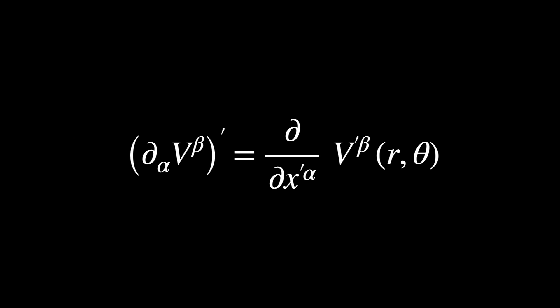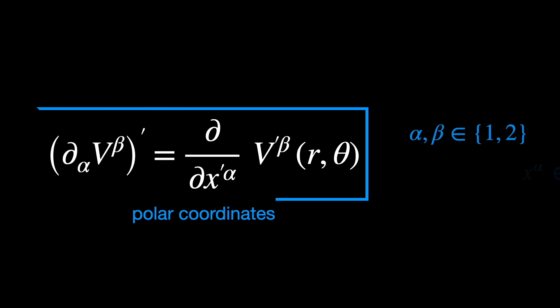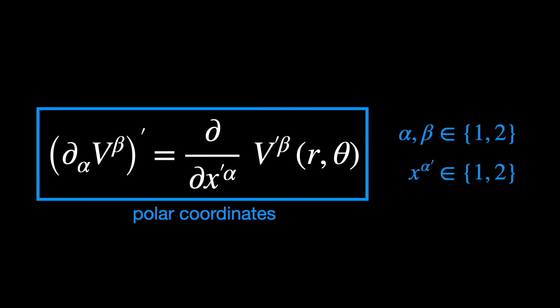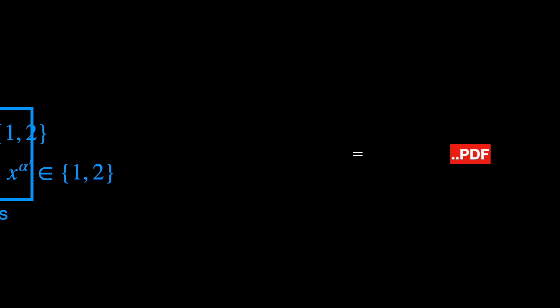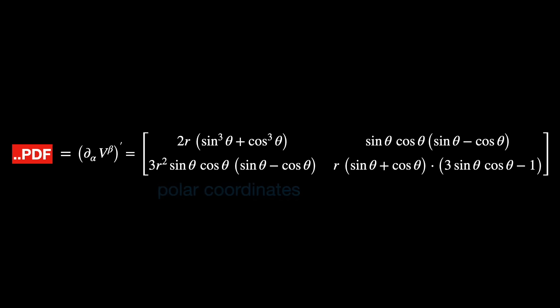Now, take the partial derivative of the components of the vector, in order to get our tensor candidate. And we find this matrix describing the object we're studying, but this time, written in polar coordinates.